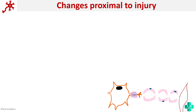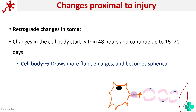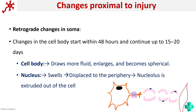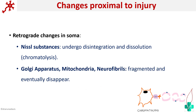The changes proximal to the injury begin within 24 to 48 hours and continue up to 15 to 20 days. In the cell body: it swells up, becomes more spherical, the nucleus also swells up and is displaced, and the nucleolus is extruded out. The Nissl substance undergoes disintegration which is called chromatolysis, and all other organelles eventually disappear.